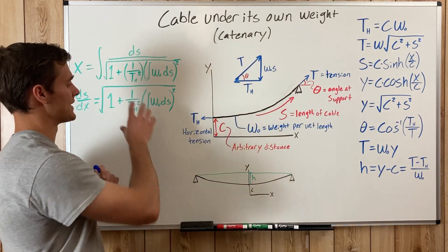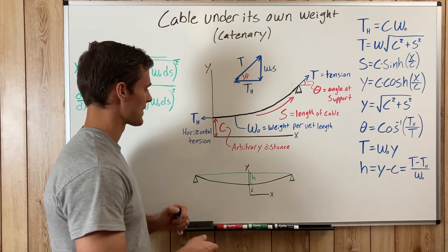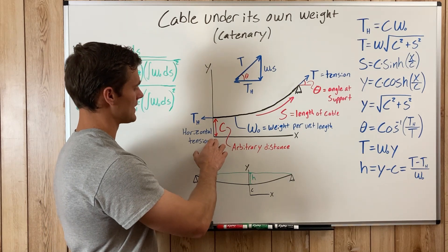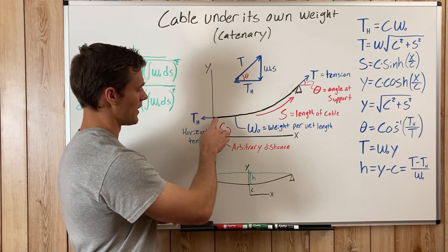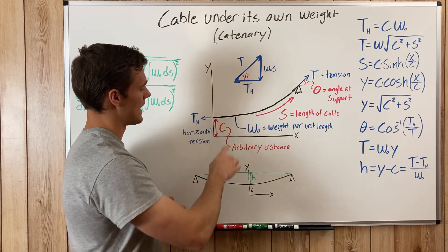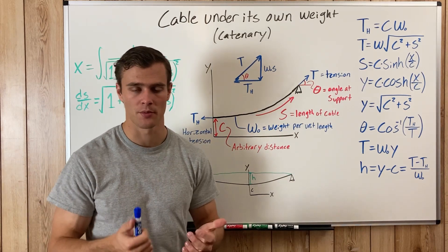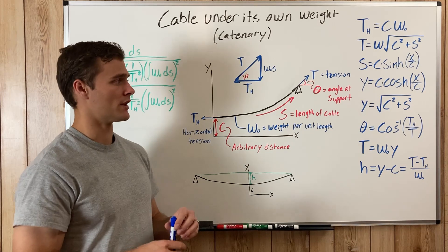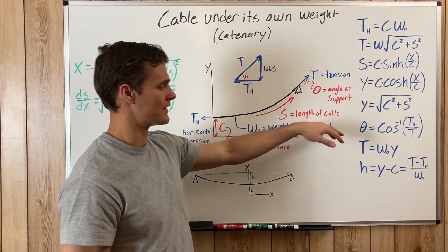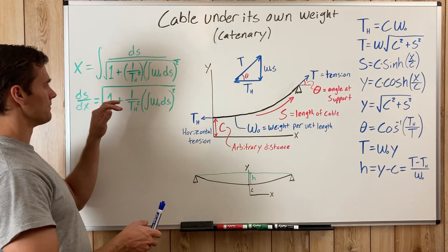The x-axis is set a distance C away from the cable, and this C is just an arbitrary distance we use to simplify all these equations. You'll notice that these equations don't have C in there.